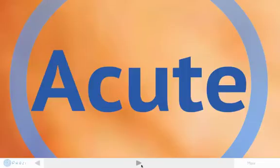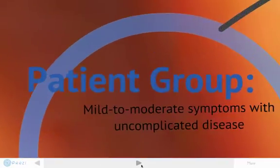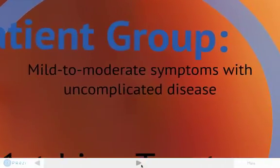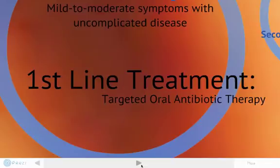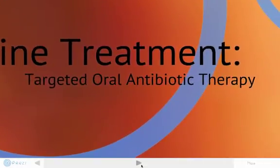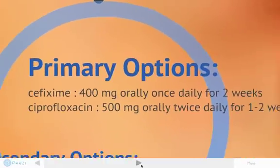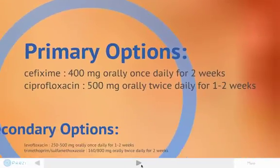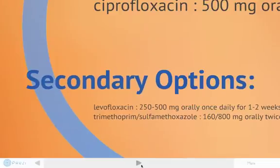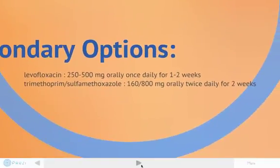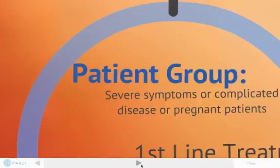Our next patient group is the acute pyelonephritis patient with mild to moderate symptoms and uncomplicated disease. The first-line treatment is targeted oral antibiotic therapy. Primary options are cefixime 400 mg orally once daily for two weeks, and ciprofloxacin 500 mg orally twice daily for one to two weeks. Secondary options are levofloxacin and trimethoprim-sulfamethoxazole.